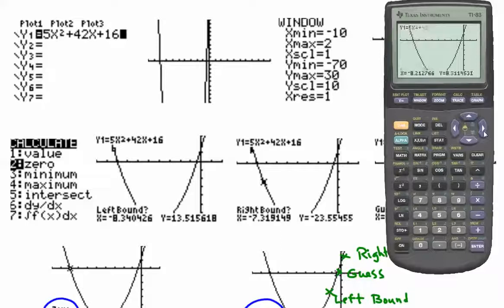And then it says, what's the right side? So I need to move past it to the right, which turns out for this intercept to be below. Hit Enter, and then it wants me to guess, so I move back right about on the line and hit Enter. And there it's telling me that my zero is negative 8.